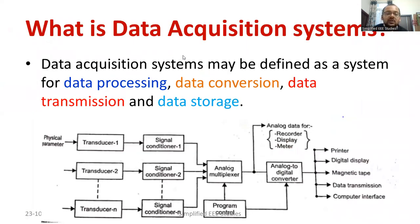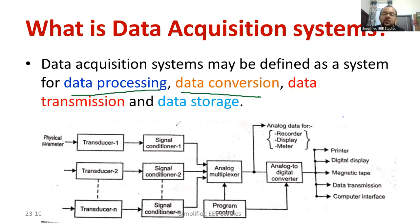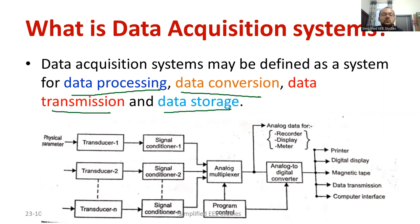Moving on to the definition: the data acquisition system can be defined as a system for data processing, later data conversion — analog to digital or digital to analog — then data transmission, where data will be transmitted using any kind of communication channels, and using any kind of memory, data storage can also be done. The whole process is generally called a data acquisition system.